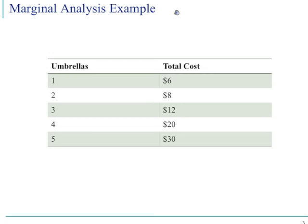Let's consider the following table regarding the relationship between the number of umbrellas produced and total cost. Assume we produce five umbrellas. What's the average cost of producing one umbrella? You have five umbrellas, the total cost is $30, so $30 divided by 5 is $6.